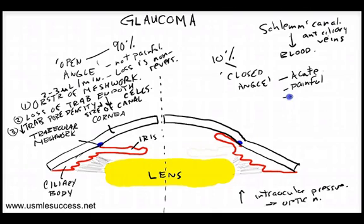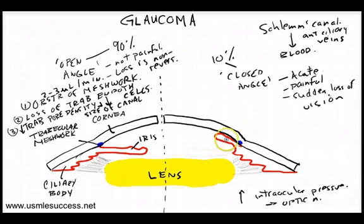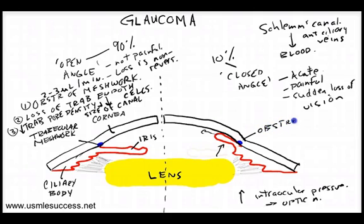Closed angle glaucoma results in a sudden loss of vision. The two main reasons we see it are because the iris has either been pulled up against the trabecular meshwork or pushed up against it. Whether pulled or pushed, the key point is that we're getting an obstruction — outflow is blocked, leading to a buildup of pressure, which causes all the signs and symptoms associated with closed angle glaucoma.